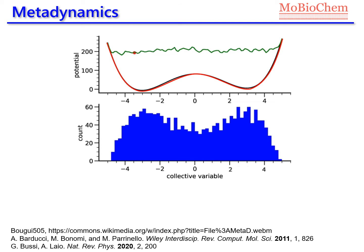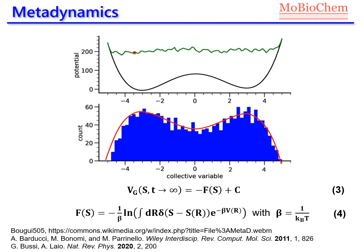In fact, if one takes the potential energy surface, turns it upside down, and compares it with the histogram, it is shown that actually the bias potential converges to minus the unbiased free energy up to a constant.